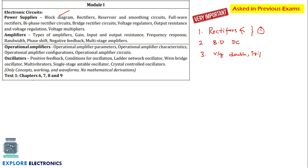Out of these three, I prefer rectifiers as one of the most important questions — asked many times in previous question papers. Coming to amplifiers, multi-stage amplifiers can be neglected, but the very important question is the types of amplifiers. The fourth important question is the types of amplifiers, where we differentiate amplifiers based on different criteria.